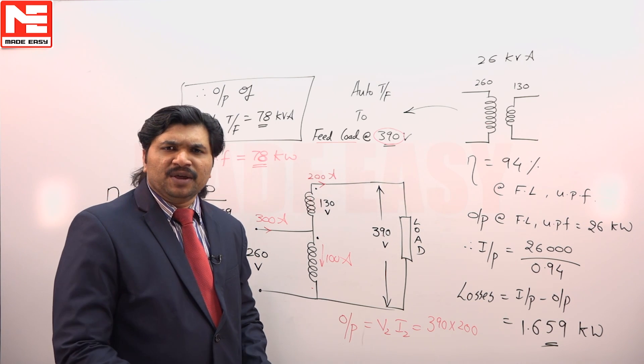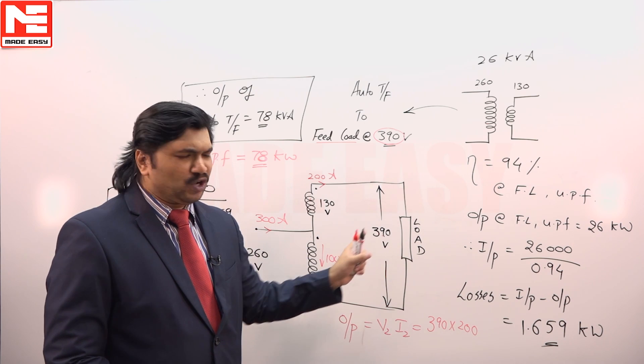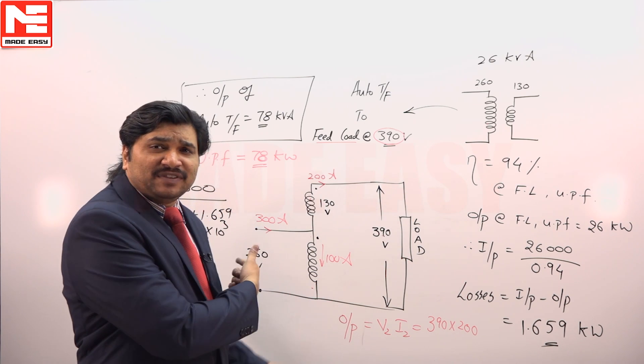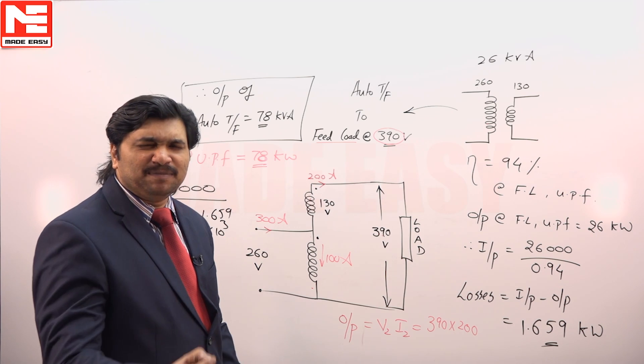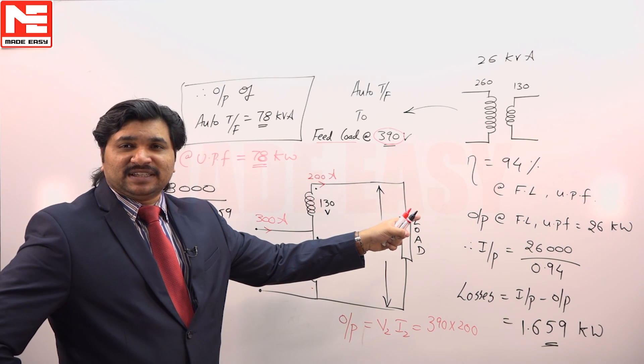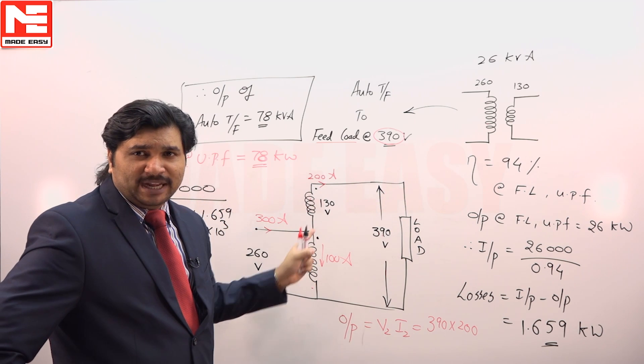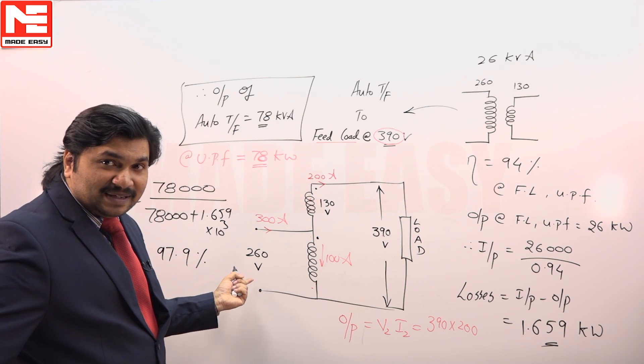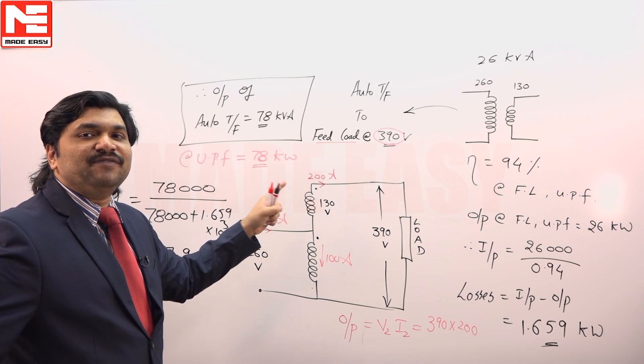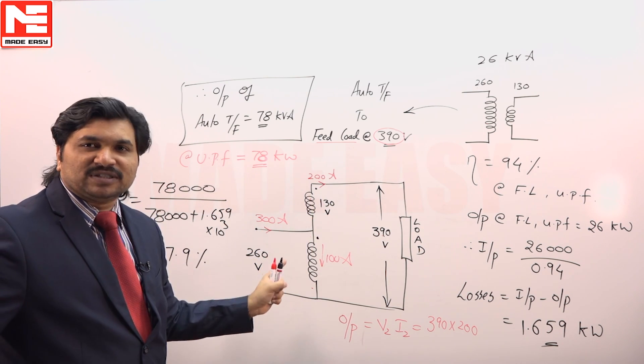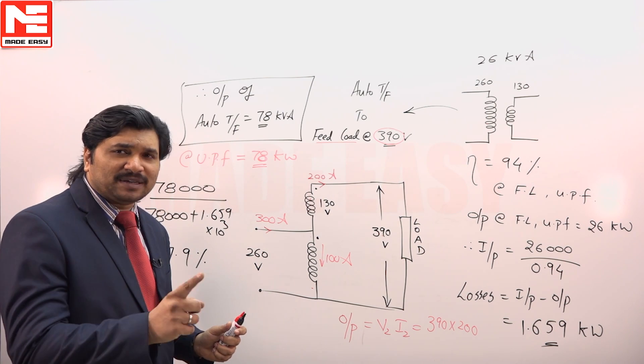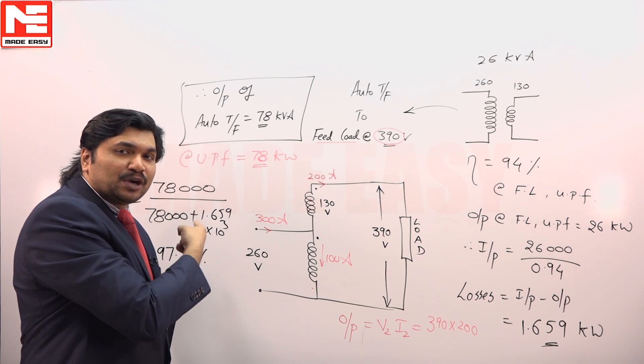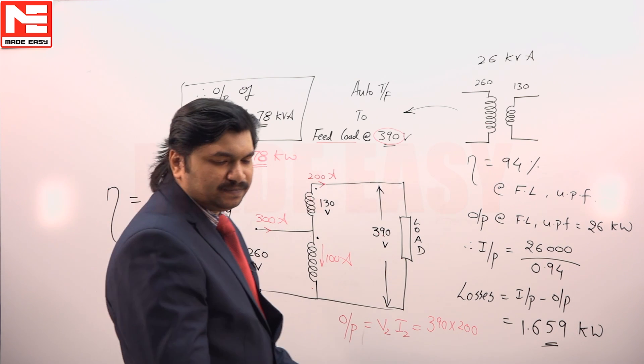You may think in this question there is no change in the loss - two winding transformer efficiency is 94 percent, losses are same, but here efficiency improved. What is the reason? Simple logic - transformer efficiency is output by input. See the output there, see the output here. As the output has been increased we got more efficiency. It is not that the losses - actually when we think of efficiency we immediately think of losses, but losses are same in both cases. Still efficiency is improved here because output has been improved.